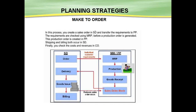This is the flow of the Make to Order scenario. In this process, you first create a sales order in SD — the Sales and Distribution module is linked with the Production Planning module. After that, the requirement for the finished product is transferred to the PP module. Based on the finished product requirement, production checks stock and orders raw material from the market — this is where the MM module links up. After production, costing is captured in the Controlling module. Then the material is dispatched.